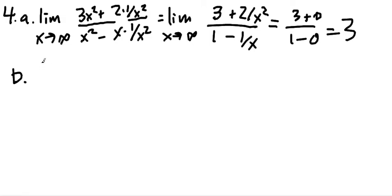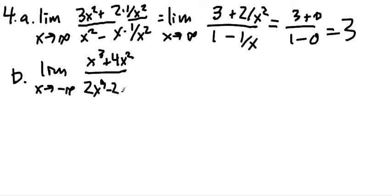B, we have a similar strategy. This is the limit as x goes to minus infinity of x cubed plus four x squared divided by two times x to the fourth minus two x. And again, the problem here is it's infinity over infinity. L'Hopital's rule you could use.